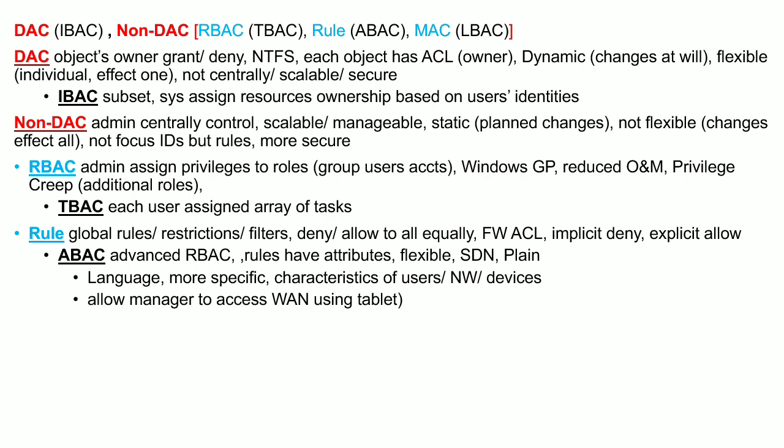For example: 'Allow manager to access WAN link using tablets.' This is a plain-language rule where you can specifically allow access to a resource using attribute-based access control.